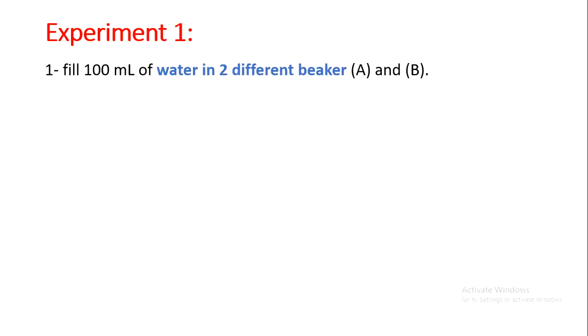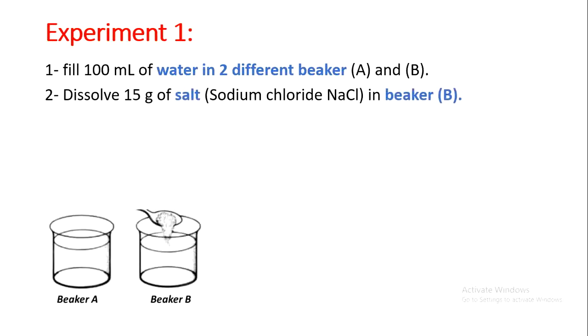We will perform an experiment together to know how to distinguish between a pure substance and a mixture through physical properties. I will give two beakers A and B, and fill each with 100 ml of water. Then I will dissolve 15 g of salt — sodium chloride, NaCl — in beaker B. So beaker A contains only water, while beaker B contains water plus 15 g of salt.